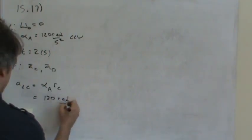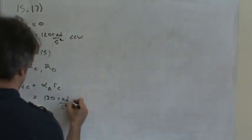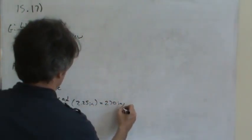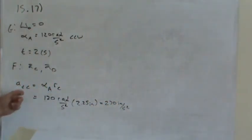It's 120 radians per second squared multiplied by two and a quarter inches. Plug all that in your calculator. It's 270 inches per second squared. There is the linear or the tangential acceleration of C.